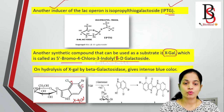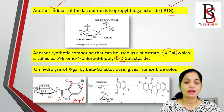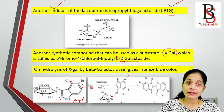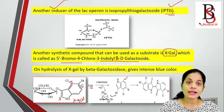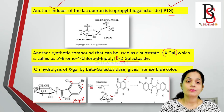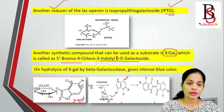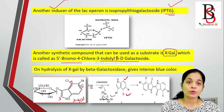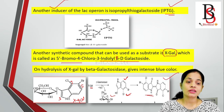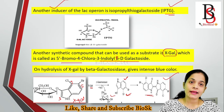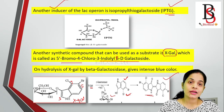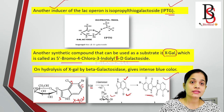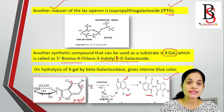X-gal (5-bromo-4-chloro-3-indolyl-beta-D-galactoside) acts as a substrate. When beta-galactosidase acts on X-gal, it releases galactoside and 5-bromo-4-chloro-3-indolyl. This indolyl product is then spontaneously oxidized and dimerized, producing an intense blue color. So when X-gal is hydrolyzed by beta-galactosidase, it produces a blue color, which is used to detect the presence or absence of beta-galactosidase in the medium.